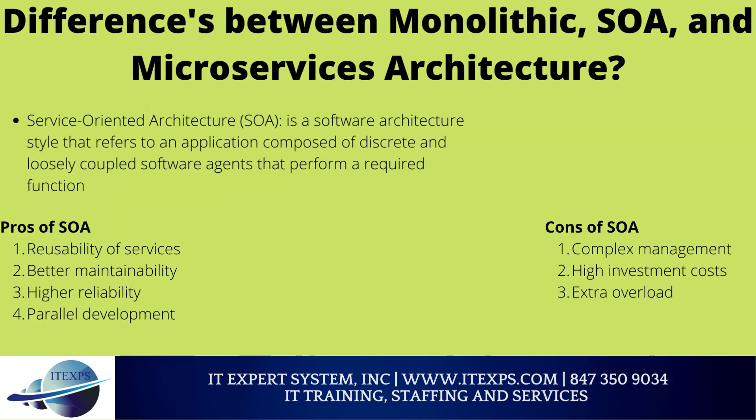Service-oriented architecture (SOA) is a software architecture style that refers to an application composed of discrete and loosely coupled software agents that perform a required function. Pros of SOA: reusability of services — due to the self-contained and loosely coupled nature of functional components, these components can be reused in multiple applications without influencing other services. Better maintainability — since each software service is an independent unit, it's easy to update and maintain it without affecting other services; for example, large enterprise apps can be managed more easily when broken into services. Higher reliability — services are easier to debug and test than huge chunks of code, making SOA-based products more reliable.